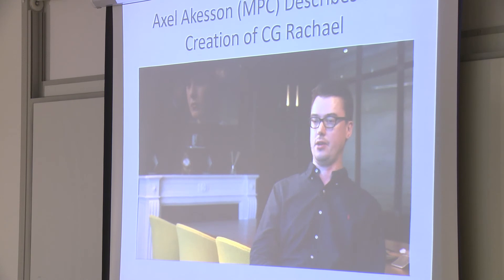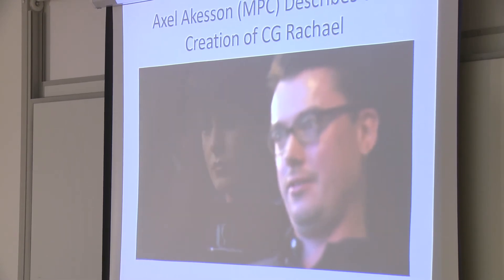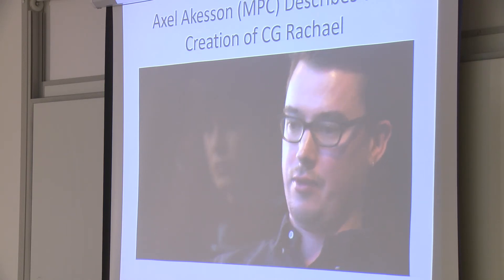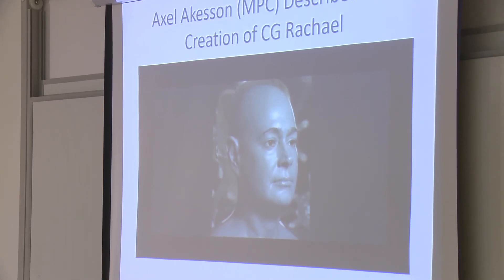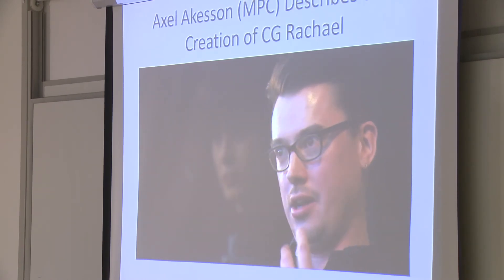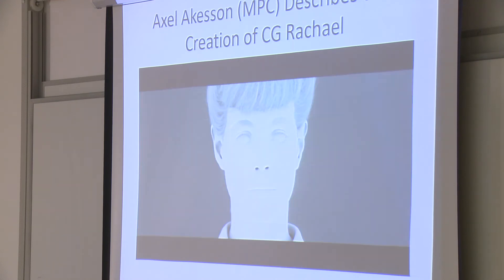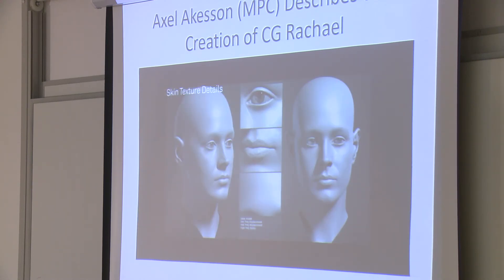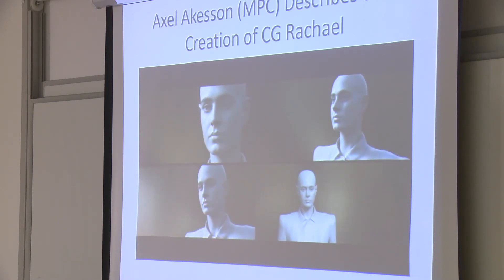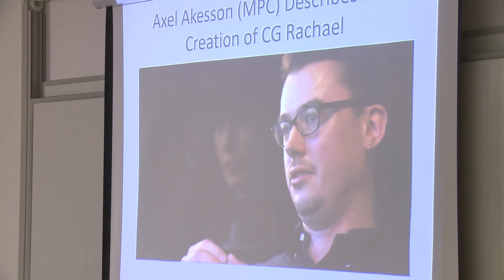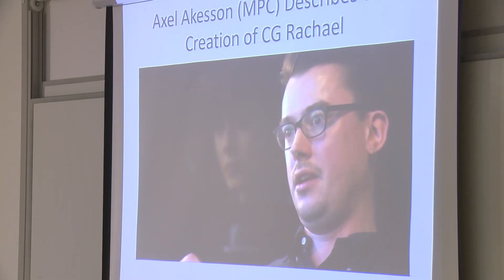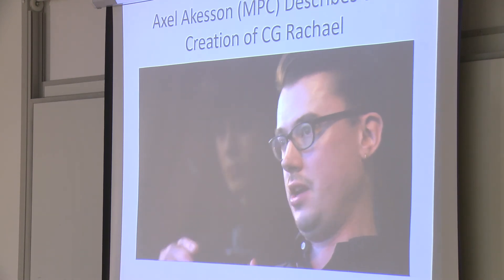We had Sean Young on set in Budapest, so we really scanned her and got a lot of photographic reference of her as well. What that allowed us to do was fit the digital skull inside the digital model. When you age, obviously your soft tissue drops down with gravity and you get wrinkles and so on, but your skull doesn't change. So we built our 23-year-old Sean Young from 1982 around that digital skull — the cheekbones, forehead, chin, nose — which was invaluable reference and ensured that we had a physically correct model of Sean Young's face.